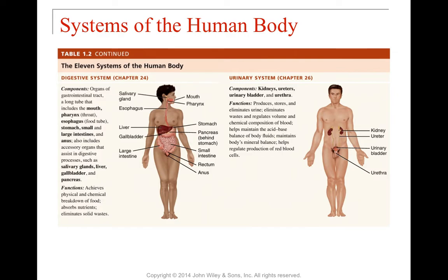The urinary system includes the kidneys, ureters, urinary bladder, and urethra. Its overall function is to create, store, and eliminate urine — also eliminating waste within that urine — and to regulate the volume and chemical composition of the blood. It plays a role in the acid-base balance of bodily fluids, helps maintain the body's mineral balance, and is also involved in helping produce red blood cells. The urinary system has many different roles.